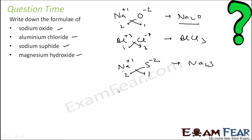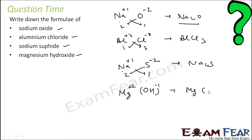Magnesium hydroxide: magnesium is metal, hydroxide is OH. Let's put the brackets here. Charge balance: magnesium is plus 2, OH is minus 1 — so you get Mg(OH)2. Pretty easy.